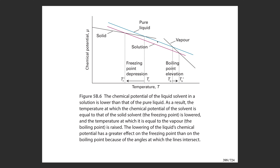The intersection of the liquid and vapor chemical potentials defines the boiling point. When you make a solution, you lower the chemical potential of the liquid but leave the vapor unchanged, causing the boiling point temperature to increase—boiling point elevation. Conversely, the intersection of the solid and pure liquid chemical potential defines the freezing point of the pure liquid. When you form a solution, lowering the liquid's chemical potential curve depresses the freezing point of the solvent in solution.